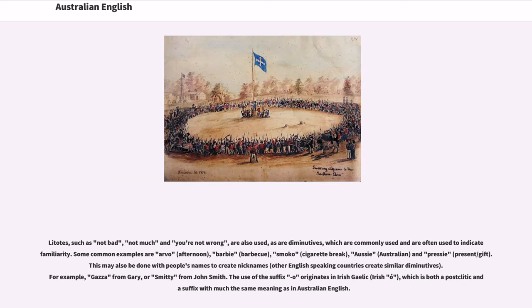Litotes, such as not bad, not much and you're not wrong, are also used, as are diminutives, which are commonly used and are often used to indicate familiarity. Some common examples are arvo for afternoon, barbie for barbecue, smoko for cigarette break, Aussie for Australian, and pressie for present/gift. This may also be done with people's names to create nicknames. Other English-speaking countries create similar diminutives. For example, Gazza from Gary, or Smitty from John Smith.